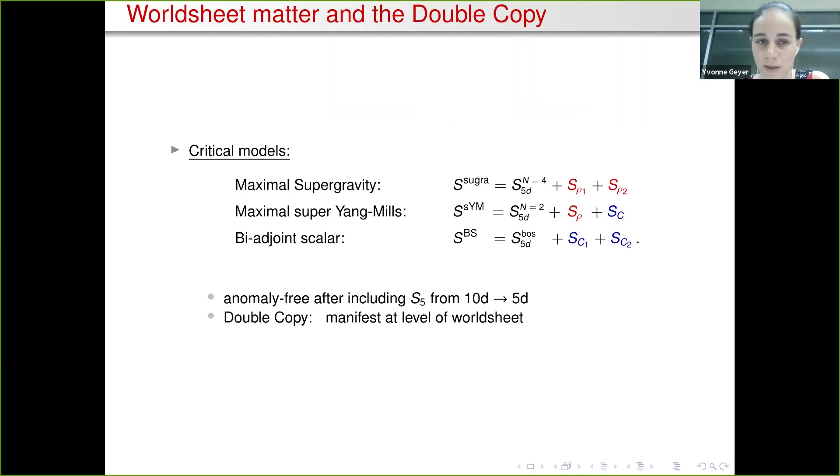With all of this we arrive at three critical models. One is for supergravity where we include two of these rho systems. One is for super Yang-Mills with one rho system and one current algebra. And one is the bi-adjoint scalar system from before, which obviously for no supersymmetry still can be incorporated in 5D in this metric. Let me mention that anomaly-free - I've cheated here a bit with the action. This is only anomaly-free if you include a free current algebra that comes from the reduction from 10D where all of these models naturally want to live, down to 5D. Finally, since this is QCD Meets Gravity, let me highlight that the double copy is very manifest here at the level of the worldsheet between maximal supergravity and maximal super Yang-Mills.